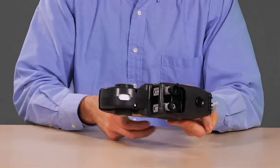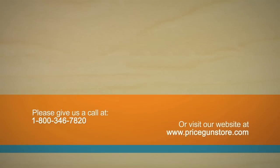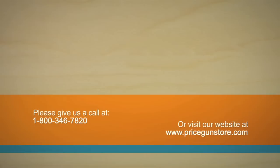Finally, tear off and discard the backing paper. I hope this video has helped you learn how to load your Monarch Price Gun. If you have any further questions, please give us a call at 1-800-346-7820 or visit our website PriceGunStore.com.